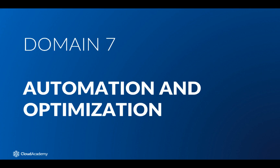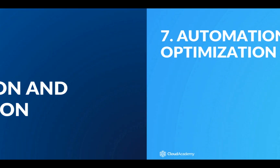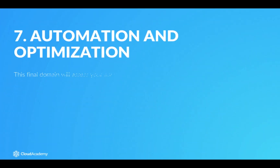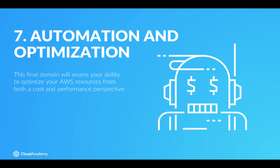Domain 7: automation and optimization. This final domain will assess your ability to optimize your AWS resources from both a cost and performance perspective. You must also demonstrate your level of understanding of automation methods when it comes to managing and controlling your infrastructure.